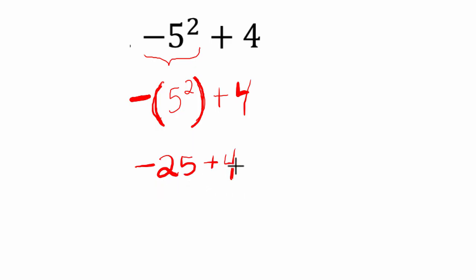So what does this equal? Well, if you're at negative twenty-five and you move up four, that means you go up to negative twenty-one.